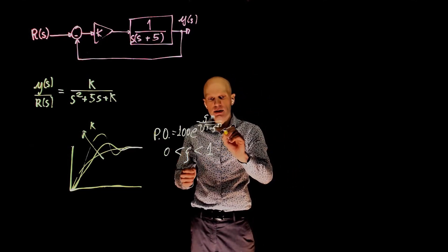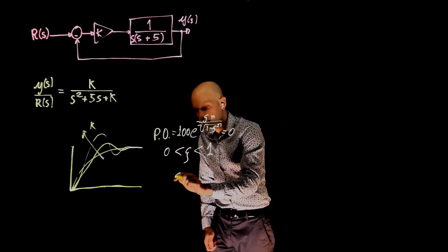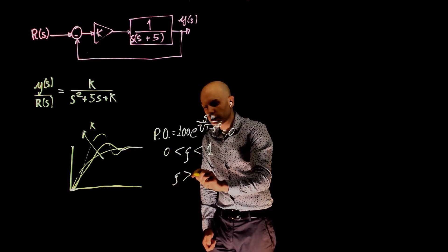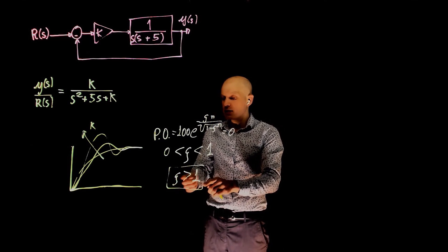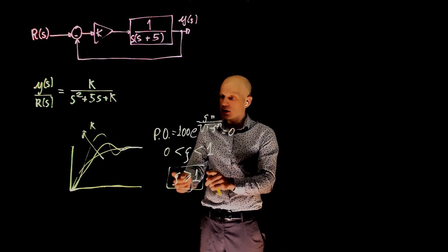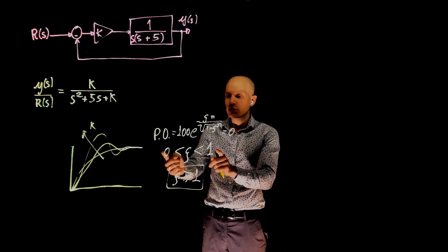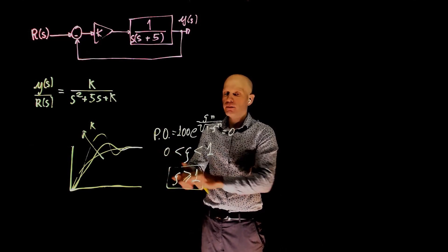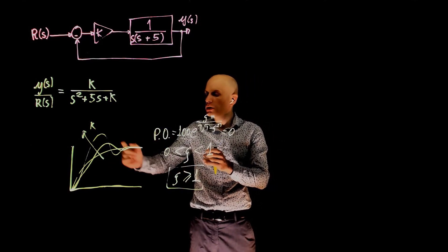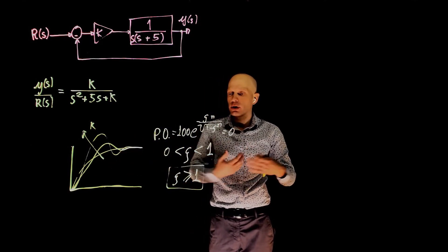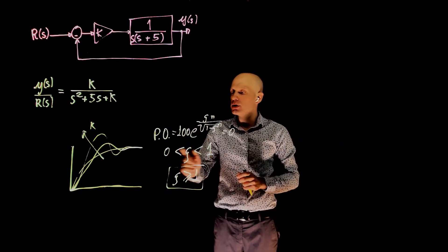If we say that this is equal to 0, a percent overshoot equals to 0 requires zeta to be greater than 1. If this is the case, then this expression is no longer valid because we are out of the bounds here between 1 and 0. Again, this is only valid when there are oscillations, there is an exponential and sinusoidal component, that only occurs when zeta is between 0 and 1.